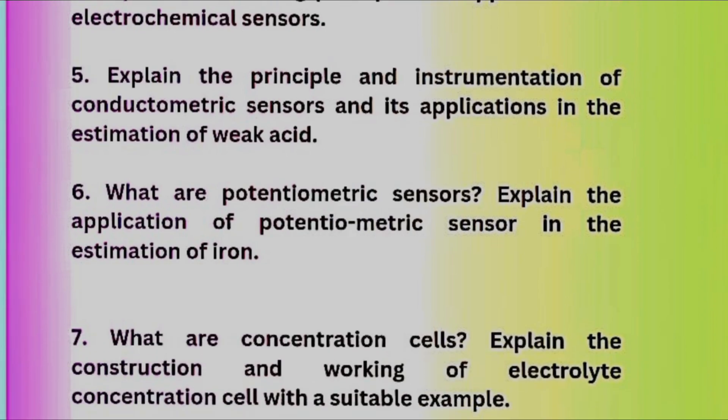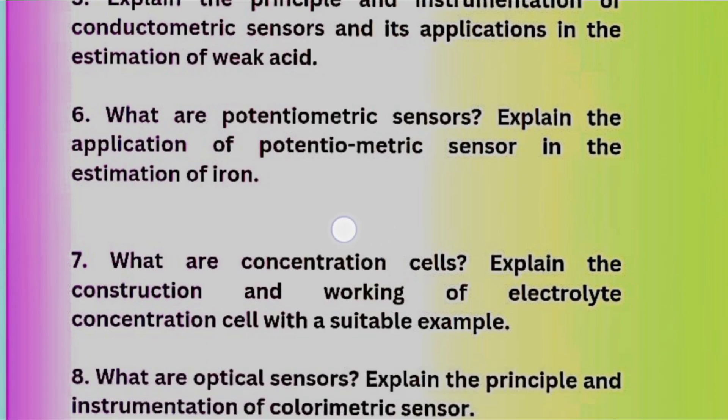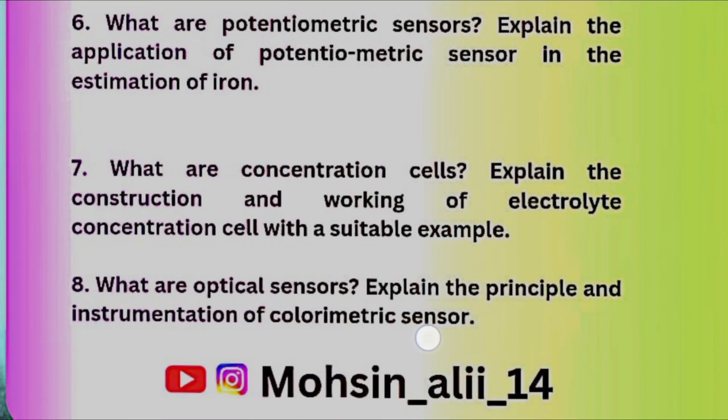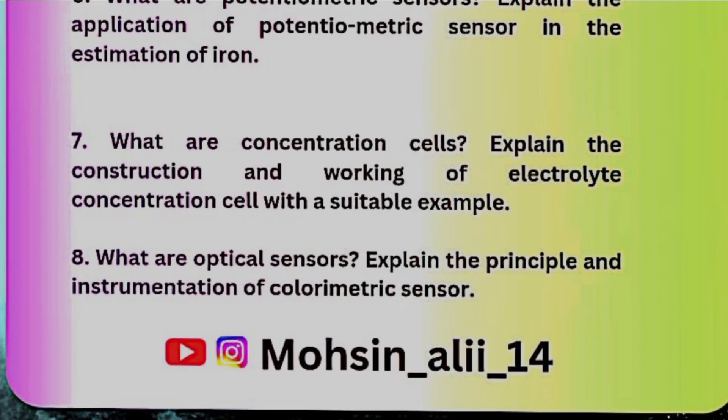Next: explain the principle and instrumentation of conductometric sensors and its applications in the estimation of weak acid. What are potentiometric sensors? Explain the application of potentiometric sensors in the estimation of iron. The last questions are: what are concentration cells? Explain the construction and working of an electrolyte concentration cell with a suitable example. And: what are optical sensors? Explain the principle and instrumentation of a colorimetric sensor. These are eight questions from Module 5.